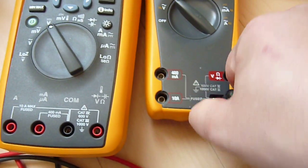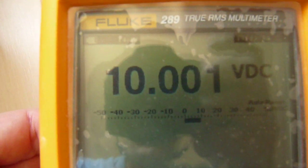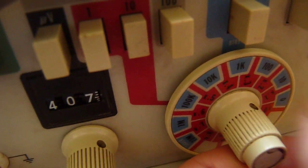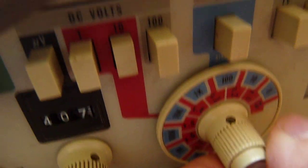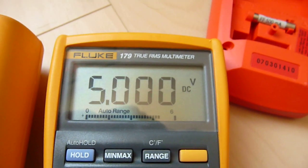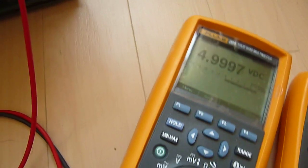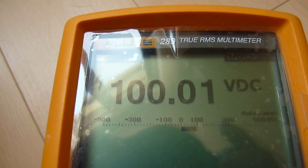And I'll change the probes to Fluke 289. And there's my 10 volts. Okay, and let's set it to, let's say, 5 volts, 5.001, and let's check here, 5.000. And let's try 100 volts, and that's DC. 100 volts DC.